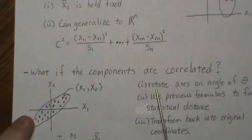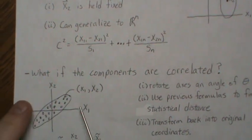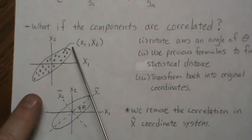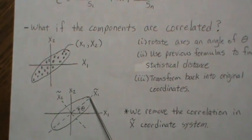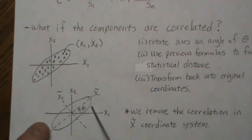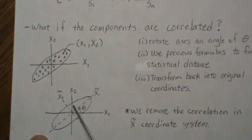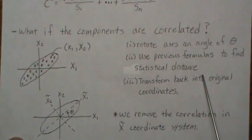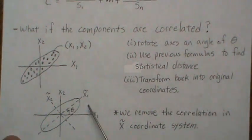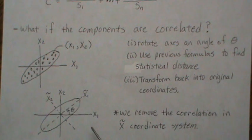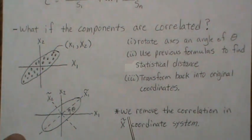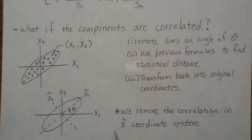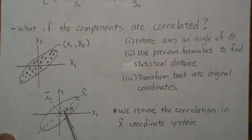So one approach, and actually the most common approach, is we rotate the axes. So we take, well, let's just show a picture of this. So these two are supposed to be the same. So we take these axes and rotate them, an angle of theta, and that's such that in this rotated axes, so there's no correlation again between the two data points. So we rotate the axes, then we use the previous formulas to find statistical distance, and then we transform it back to the original X1 and X2 coordinates. And so essentially, we remove the correlation between our variables in this new X tilde coordinate system. We just rotate it up, and then we're back in the no correlation.